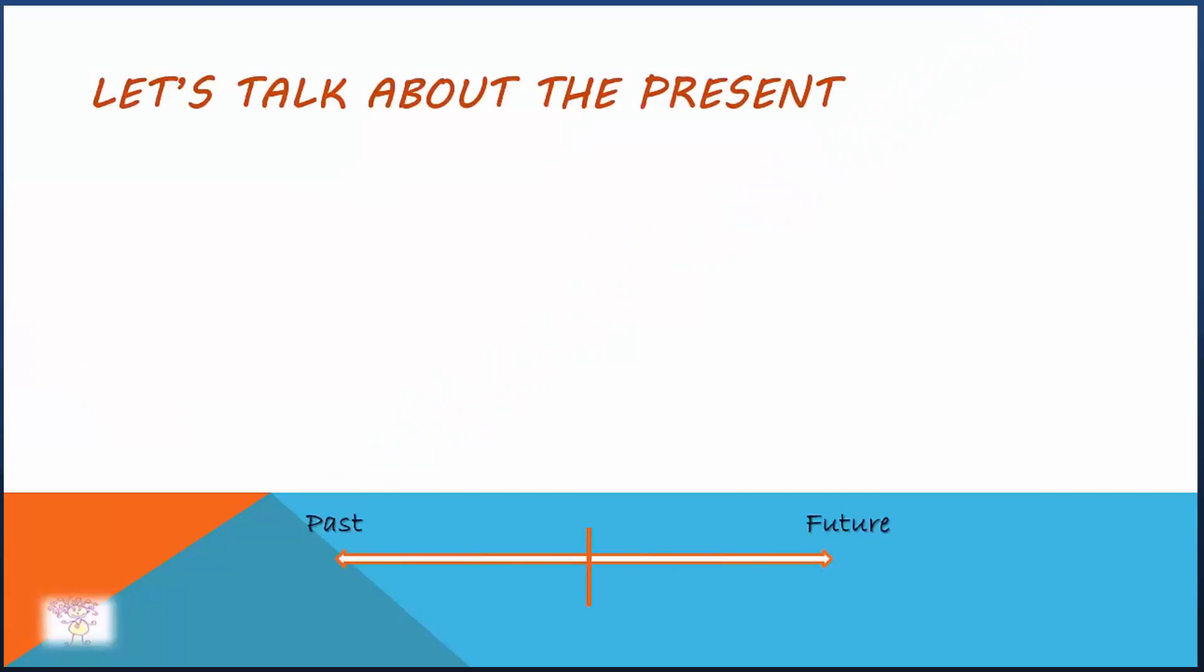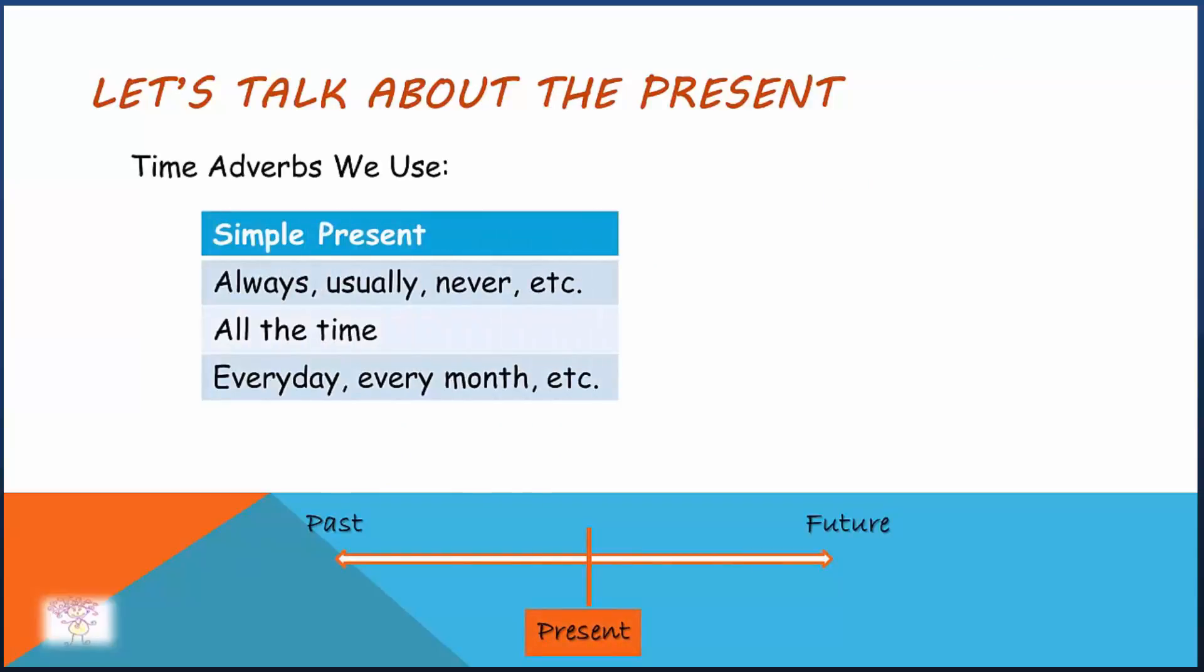Let's talk about the present. Here are sample time adverbs we use in simple present tense: always, usually, never, etc. These are often called frequency adverbs. They answer the question, how often? All the time, every day, every month, etc.